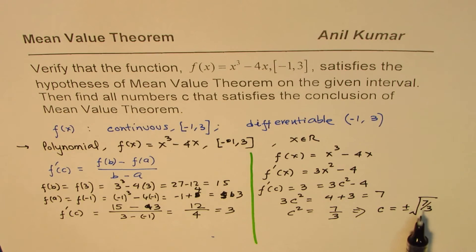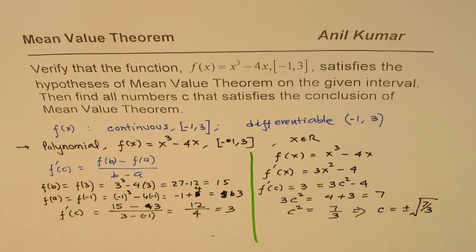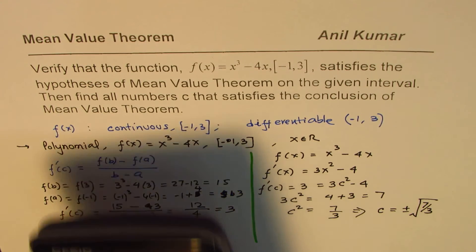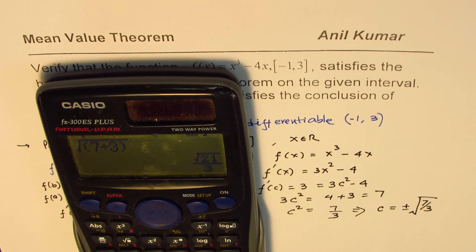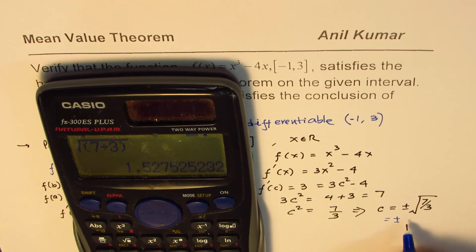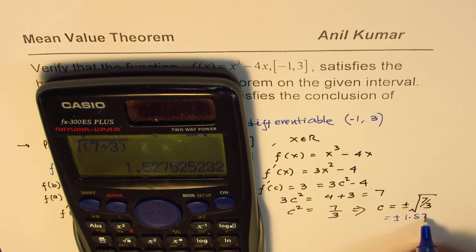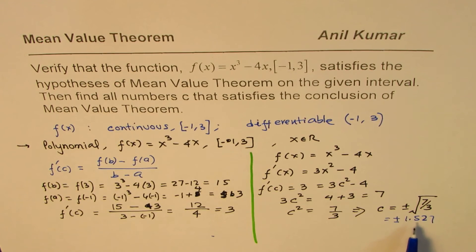Now, we need to check whether these values are within this interval or not. So, we can just take the calculator and calculate this value. So, we have square root of, let me write within brackets, 7 divided by 3, bracket close, equal to. So, that in decimals is equal to plus minus 1 point approximately. Let's say, let me write 1.527. How does it matter? So, plus minus 1.527.